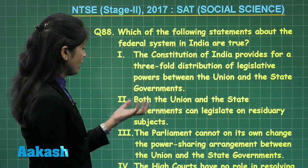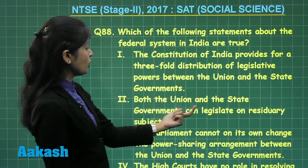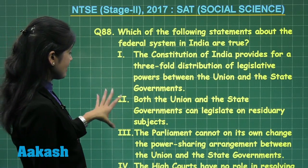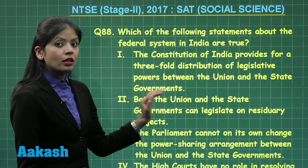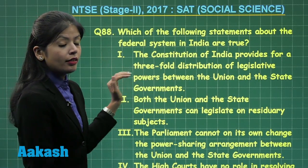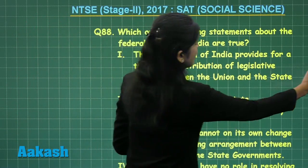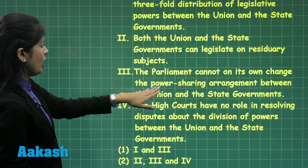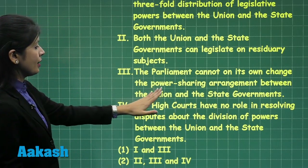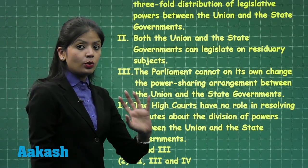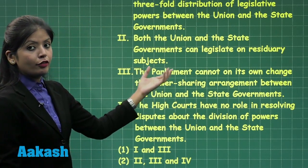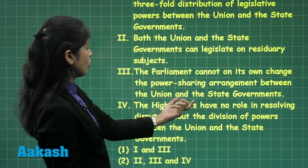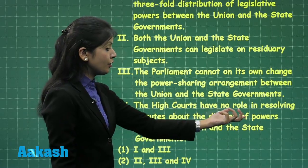Statement two says both the union and the state governments can legislate on residuary subjects. This is not in accordance with the federal system structure, so statement two is false. Statement three says the parliament cannot on its own change the power-sharing arrangement between the union and the state governments — we know this power is not given to the parliament, therefore statement three is absolutely correct.